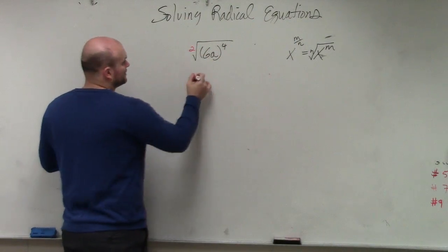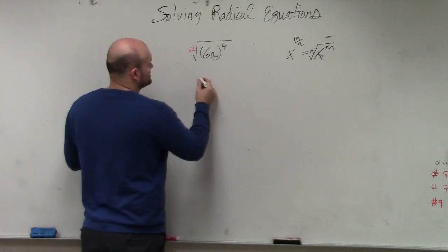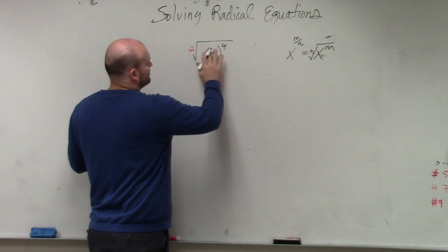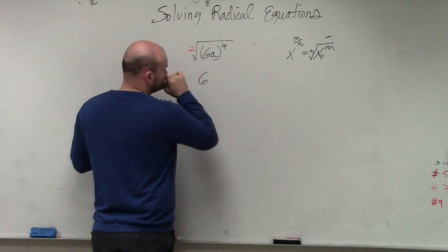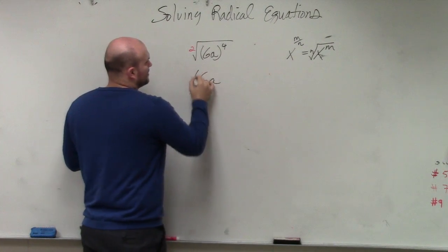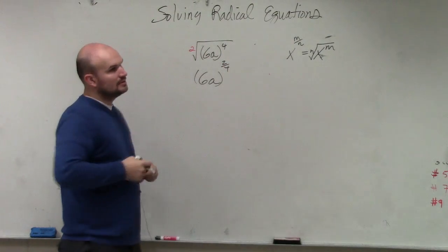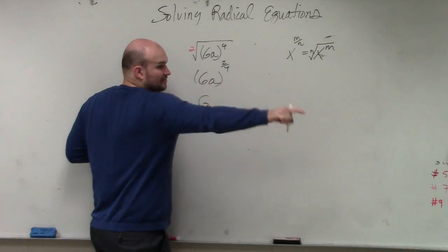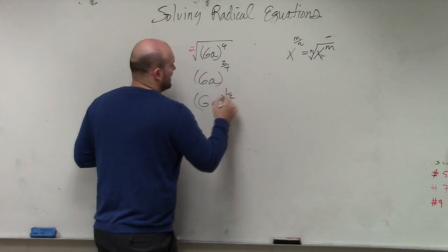So therefore, this would be what a lot of students do. It did have parentheses. So therefore, this is 6a in parentheses to the 2 over 4. And then obviously, we can simplify that into 6a to the 1 half power.